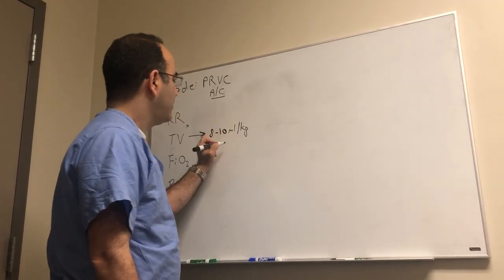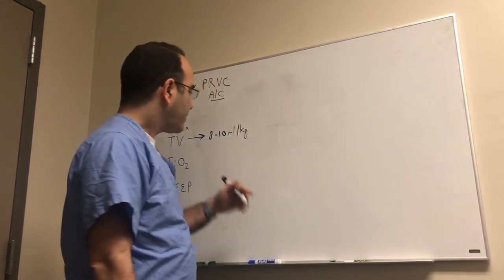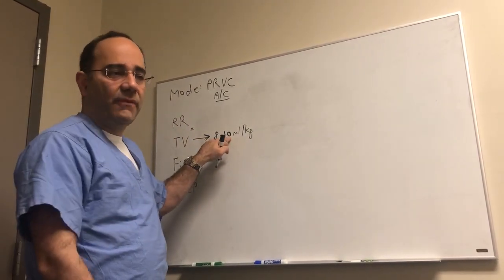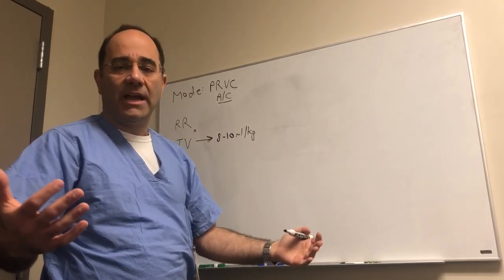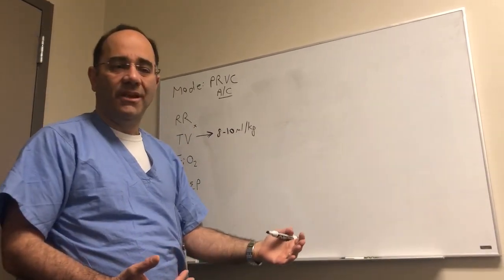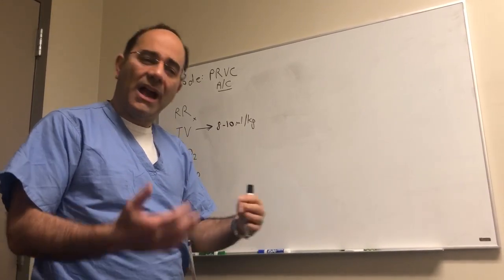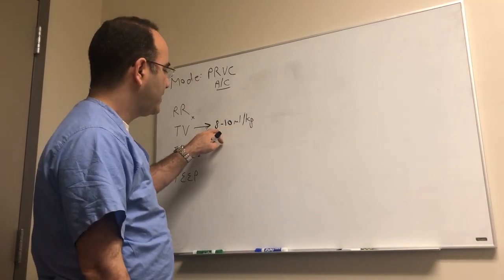To be honest with you, what I kind of do is eyeball the person, figure out roughly what their body weight should be, multiply it by ten because that's easy, and then just subtract a little bit. So if you get some person who's 90 kilograms, 85 kilograms, times 10 would be 850. That's probably a little bit too much. I dial it back to like 600 or 550 and kind of start from there. So you don't have to get too anal about the math. Someone should have 8 to 10 cc's per kilo.